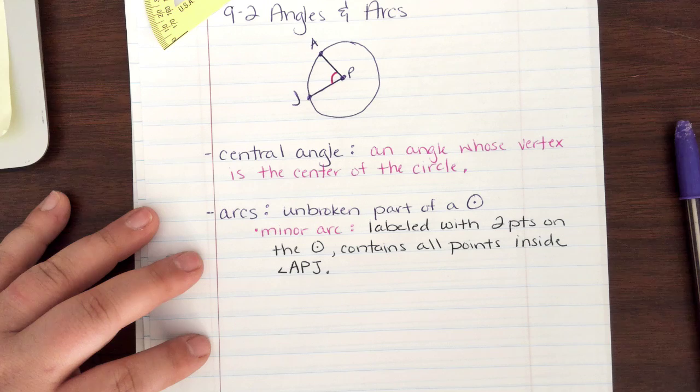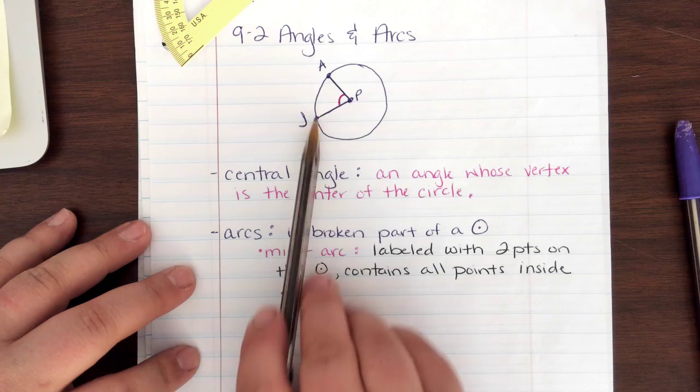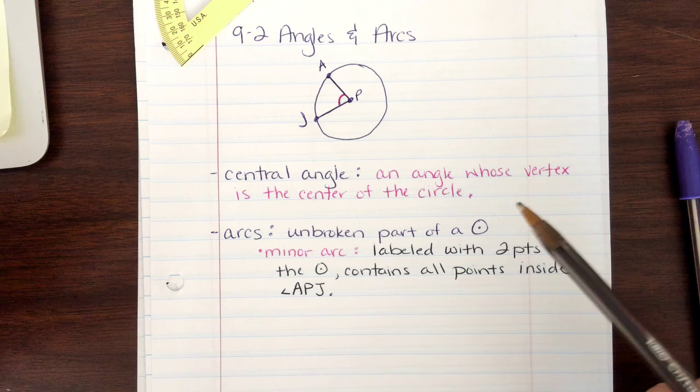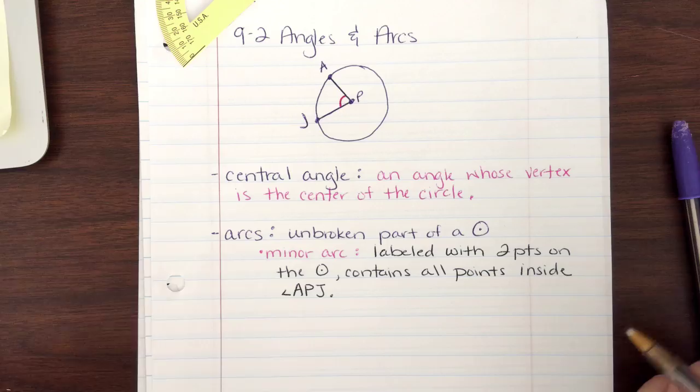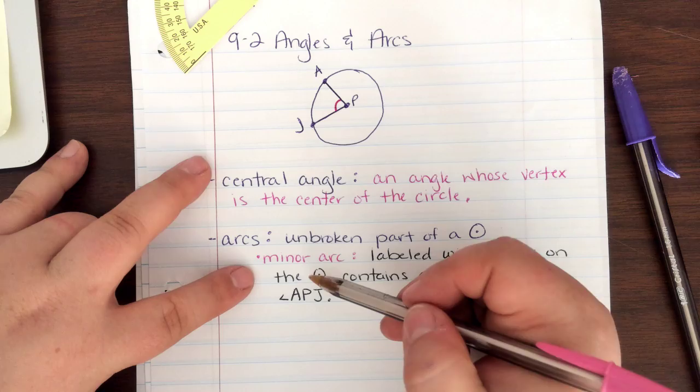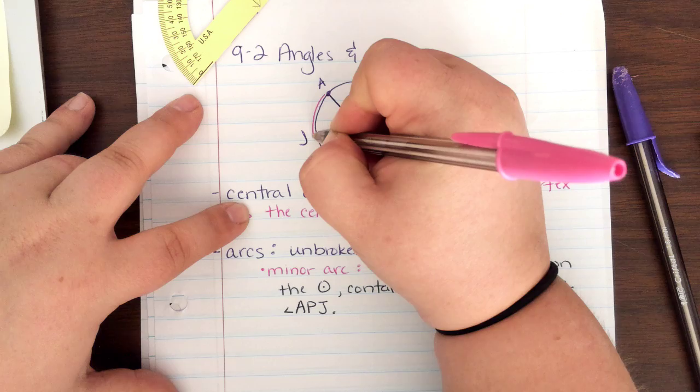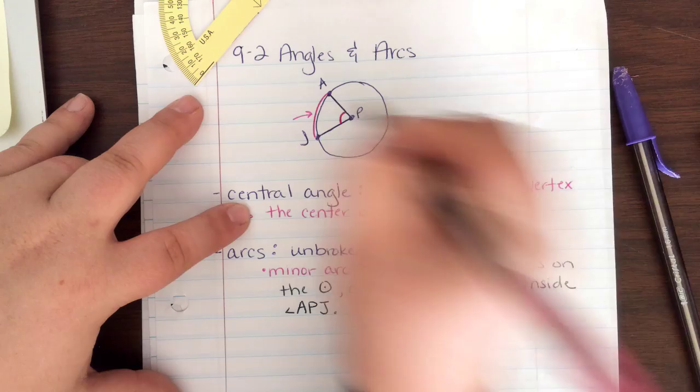And that minor arc contains all points inside angle APJ that we have on our circle. So did you hear that? So our minor arc, and it can be anywhere on this circle where you have your little central angle. It can be in any direction. But the point of it is that the minor arc is the smaller piece. So what I want you to do, go back up to your circle. I want you to kind of highlight from A to J. This part here, A to J. Give it a little arrow. That is your minor arc.